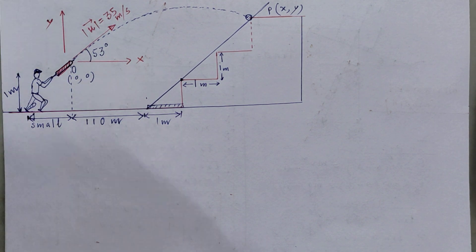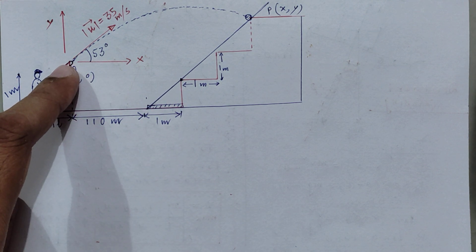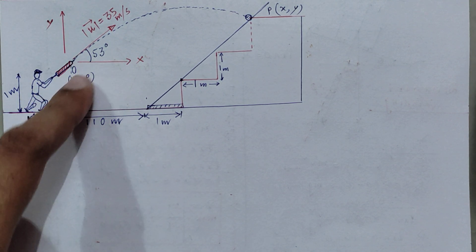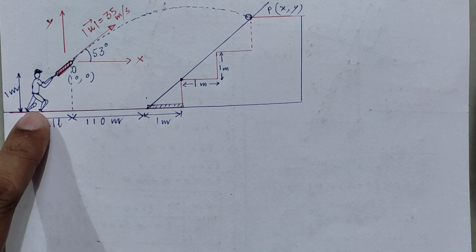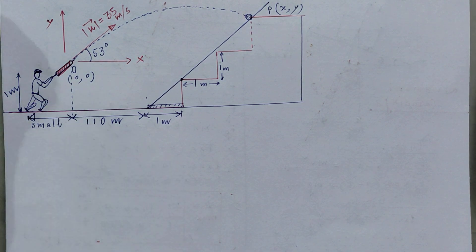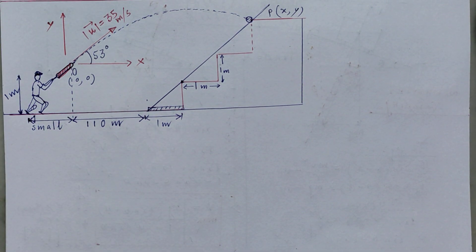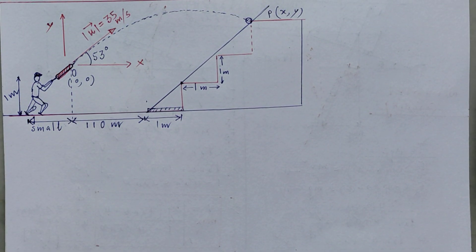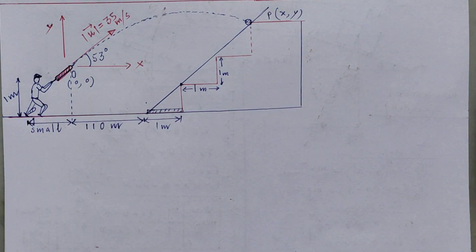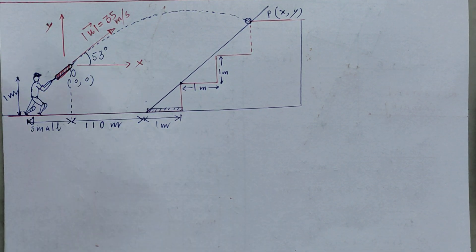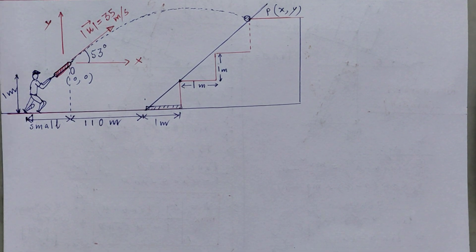One very important assumption — often not mentioned in the question — is that the distance between the point from where the ball was fired (the middle of the bat) and the foot of the player is negligible. We neglect it because the field is very long. The point from where the ball has been hit is our origin. The question is: on which step will this ball hit the gallery?